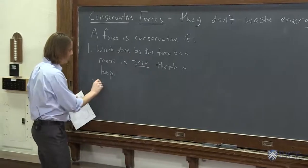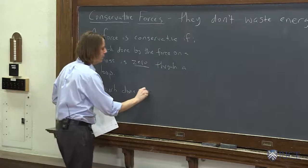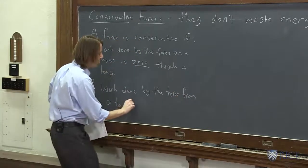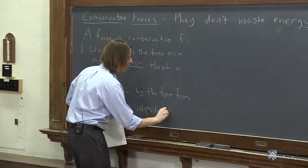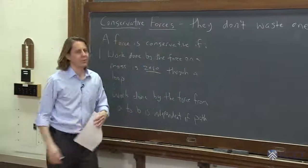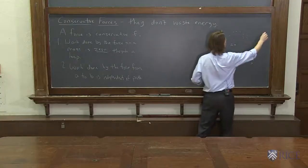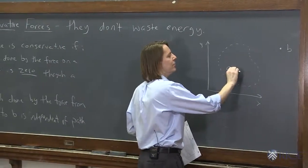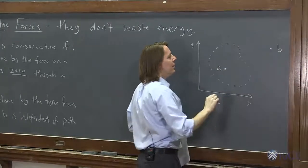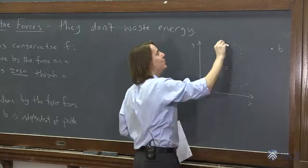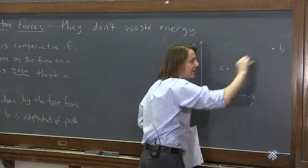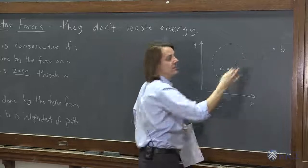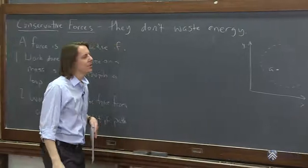A second definition: work done by the force from A to B is independent of path. You don't have to just do this for loops. Going from A to B in a straight line gives you some negative work from gravity. But if you went all the way up here and back down — even more negative work from gravity, but some positive work to make up for it — in the end it's the same amount. What if you go down first? Positive work from gravity, but then you've got to push back up. In the end it balances out. It doesn't matter which way you go; you have the same amount of work from the gravitational force going from A to B. So gravity is conservative.